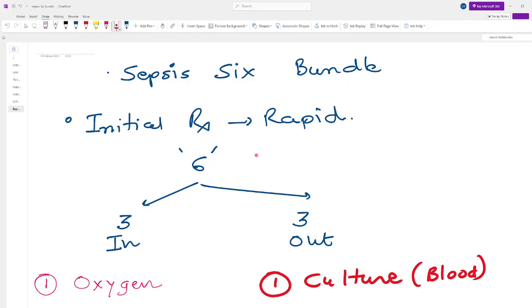Hello everyone, in this video we're going to talk about the Sepsis 6 Bundle, which is the most important thing here. You might have heard this before. I'll tell you what exactly Sepsis 6 means. It is basically the initial treatment for sepsis and it should be rapid. Once the patient is suspected for sepsis, the clinician should start this Sepsis 6 Bundle.